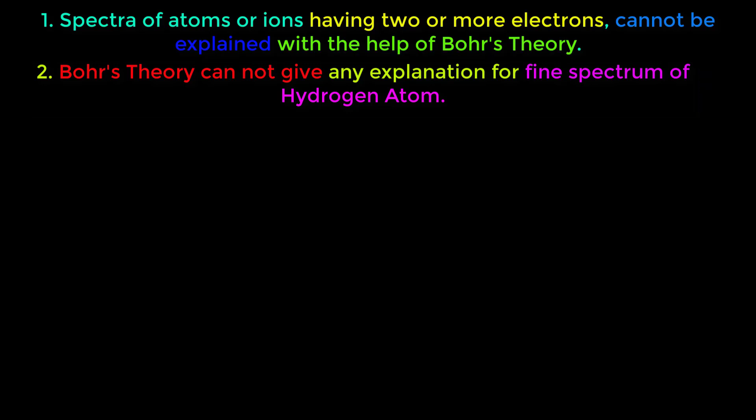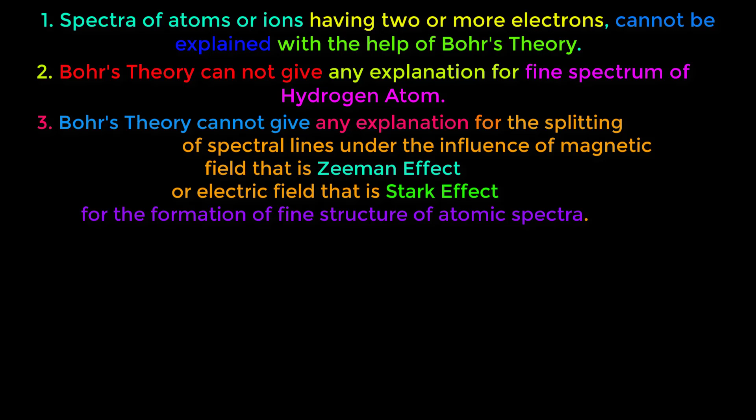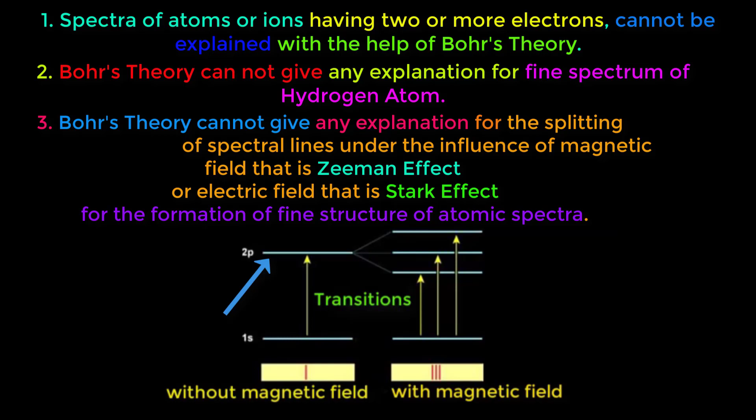The third limitation of Bohr's theory is that it cannot give any explanation for the splitting of spectral lines under the influence of a magnetic field, i.e., the Zeeman effect, or an electric field, i.e., the Stark effect, for the formation of fine structure of atomic spectra. When a spectral line is passed through a magnetic field, it splits into several spectral lines. This effect is called the Zeeman effect.